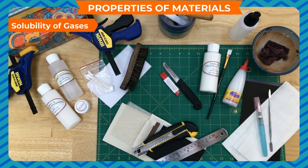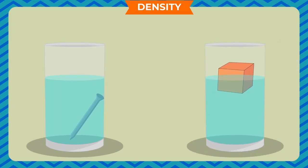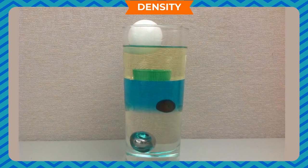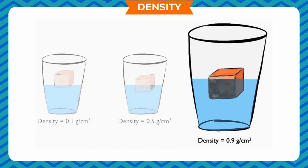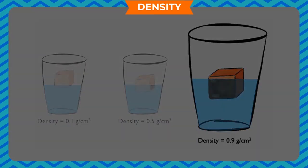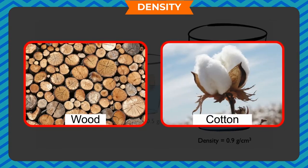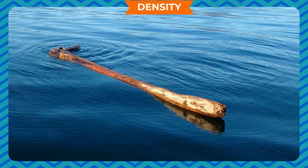Materials can be classified on the basis of their solubility in water — some soluble substances are sugar and salt. Density: if you drop an iron nail in water it sinks, but a piece of wood floats. Substances heavier than water sink, while substances lighter than water float. The mass per unit volume of a substance is known as its density. A substance like iron or aluminium, which is denser than water, will sink, while a substance like wood or cotton, which is less dense than water, will float.